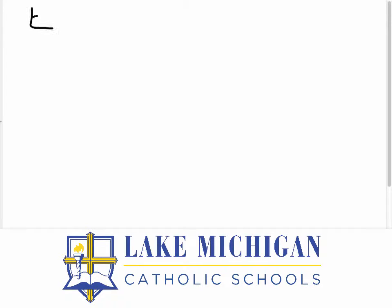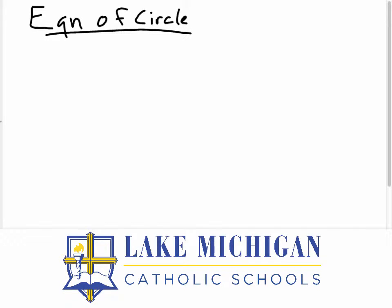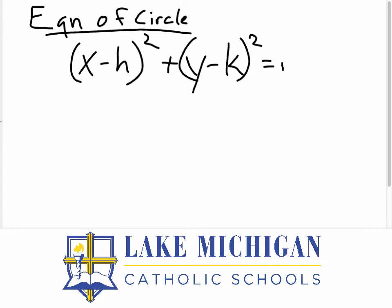The equation of a circle — the standard form — is x minus h squared plus y minus k squared is equal to the radius of the circle squared, where h comma k is the center of the circle.